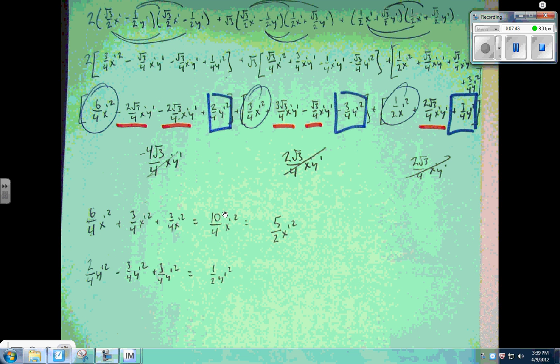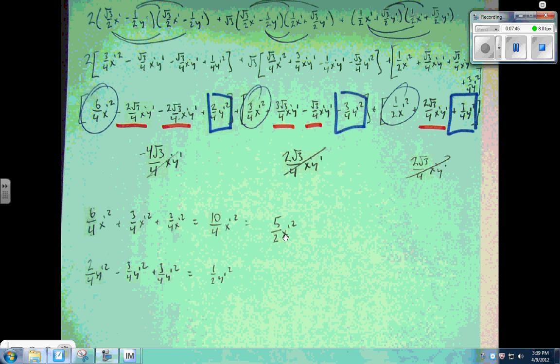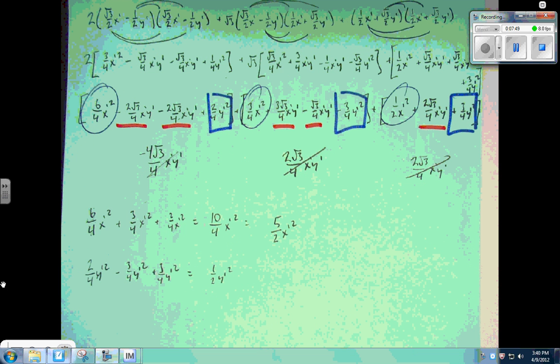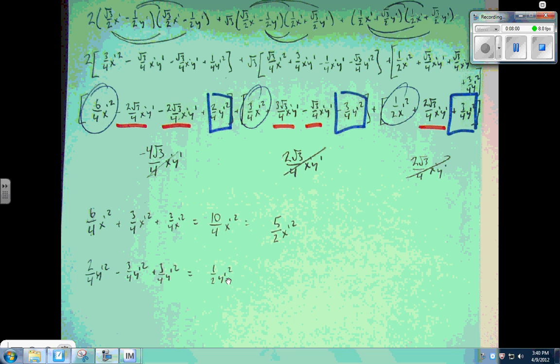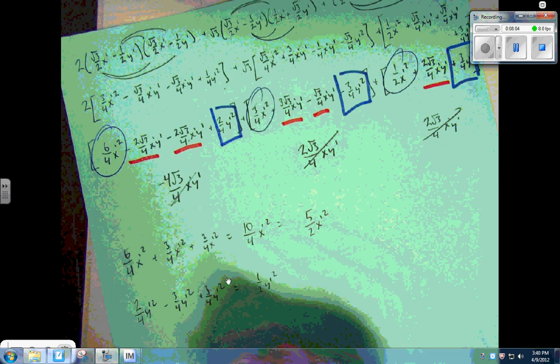x' squareds went to 10/4, which is 5/2. So notice I didn't even reduce these. I just kept them all in fourths and bumped this 1/2 up. Y' squareds here in the blue rectangles. 2/4 minus 3/4, 3/4. Cancel, cancel. 1/2 y' squared. There. So what you have now...